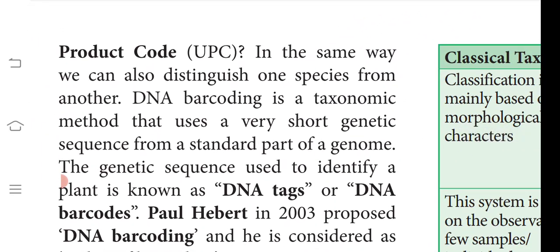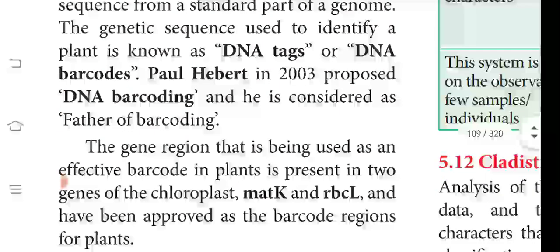DNA barcoding is a taxonomic method that uses a very short genetic sequence from a standard part of the genome to make a barcode — a DNA tag used to identify organisms, similar to barcodes in supermarkets. It was proposed by Paul Herbert in 2003, and he is also called the father of barcoding. The gene region used as an effective barcode in plants is present in two chloroplast genes.